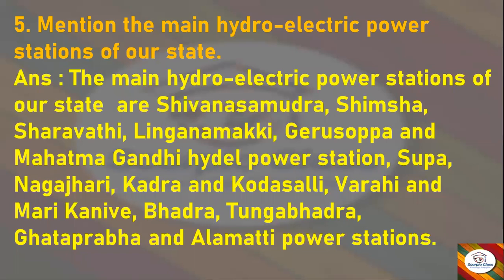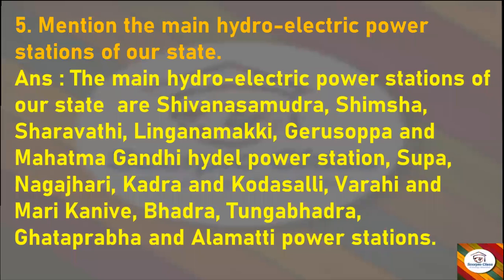Continuing the list of hydroelectric power stations: Supa, Nagathari, Kadra, Kodasalli, Varahi, Marikaniwe, Bhadra, Tungabhadra, Ghataprabha, and Almatti power stations. These are the main hydroelectric power stations of Karnataka. Now we move to the 'Match the Following' section with Column A and Column B.